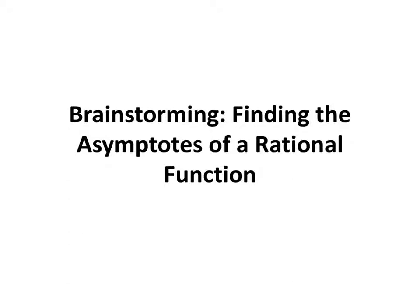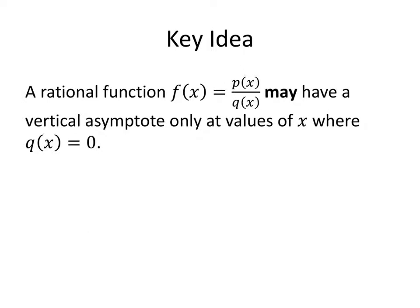In this video, we'll learn how to find all of the asymptotes of a rational function. Let's start by talking about vertical asymptotes. A key idea is that a rational function might have vertical asymptotes, but it can only have them at values of x where the denominator equals 0.